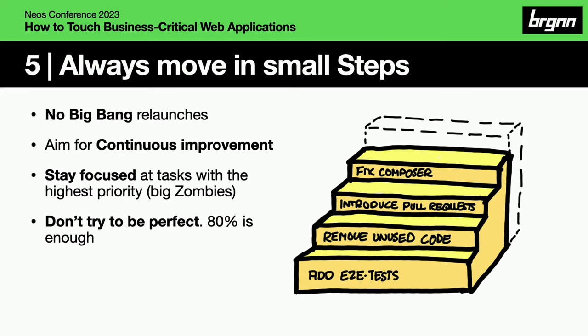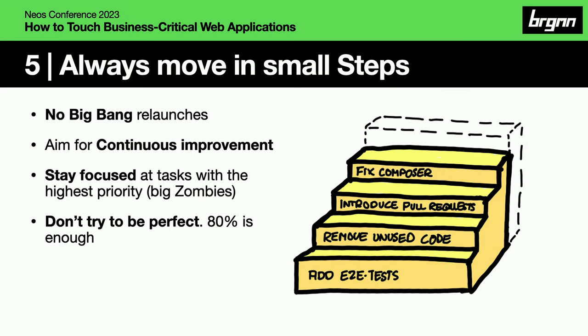Number five: management people like to do big bang relaunches — solving the problem in one big shot. I don't believe in that and I've tried. In most cases it doesn't make sense. It's always better to do small steps and stay focused on only some tasks. Don't try to be perfect, because sometimes you start to fix something, then you see another problem and try to solve that too — and that's the start of the end.